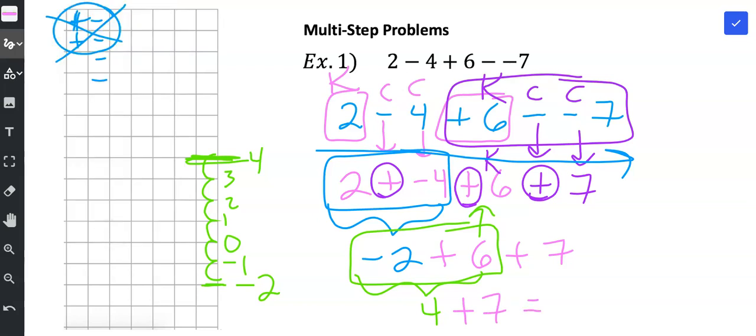And we should already, I mean in 5th grade you should have known already how to add 4 plus 7. So I'm just going to go ahead and add it. 4 plus 7 is 11. And that is my final answer.